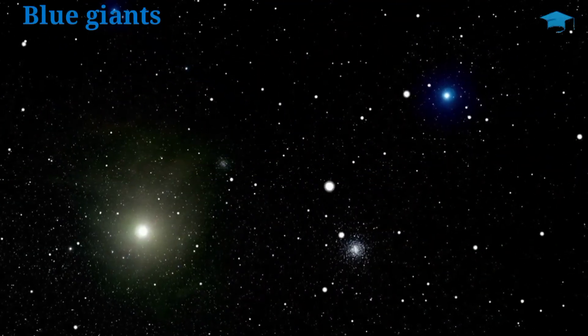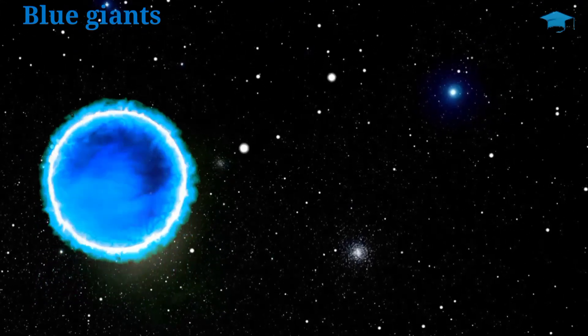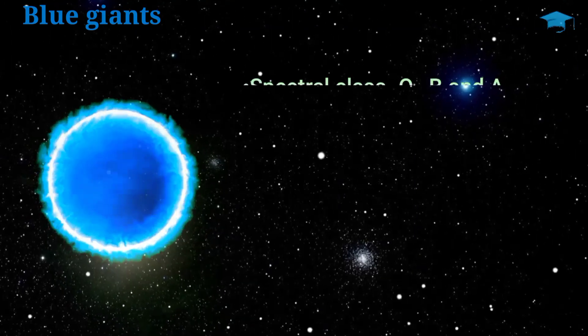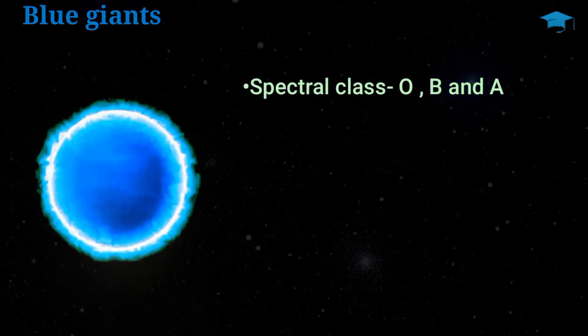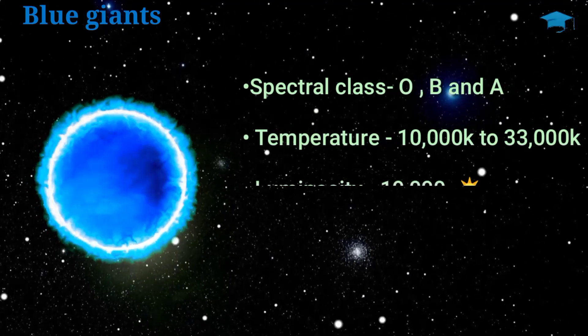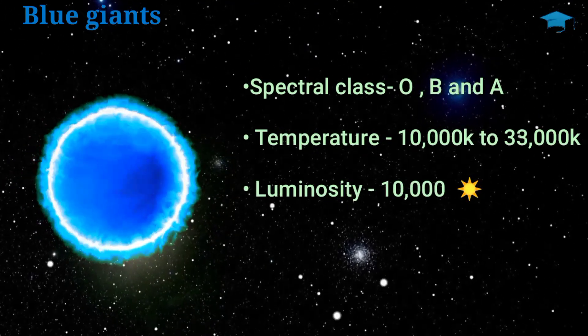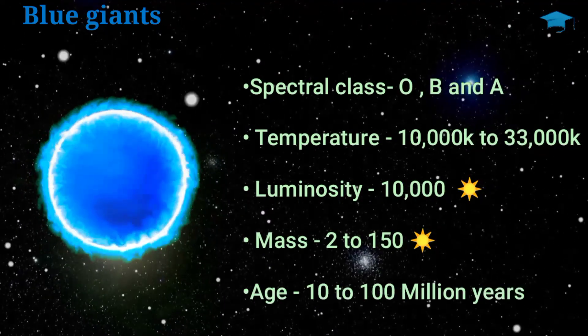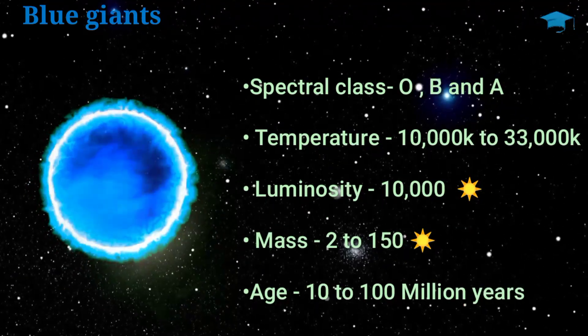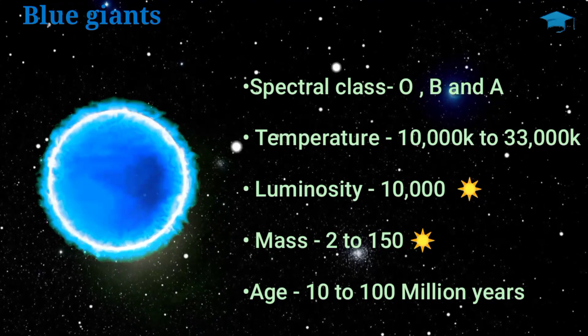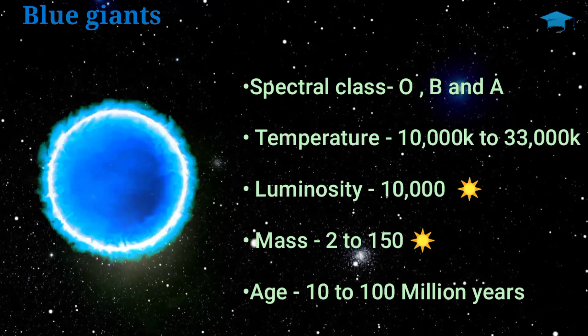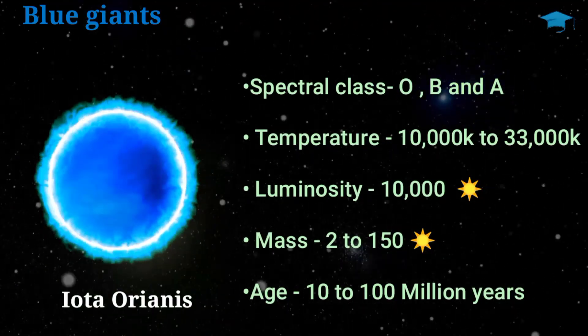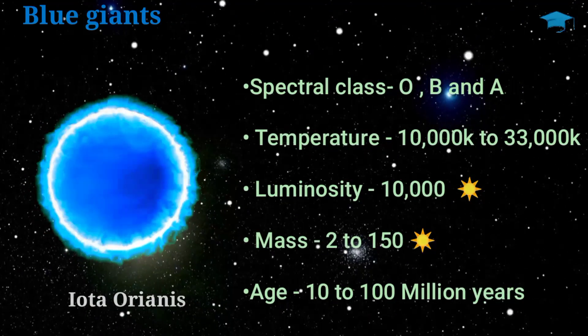Now blue giants are a type of star which are very rare and really tough to find in our universe. They are placed in the spectral type O, B, and A in the Morgan-Keenan system. Their temperature ranges from 10,000 Kelvin to 33,000 Kelvin with luminosities of around 10,000 times that of our sun. They have a mass of 2 to 150 times that of our sun and last around 10 to 100 million years. Iota Orionis is considered a blue giant.